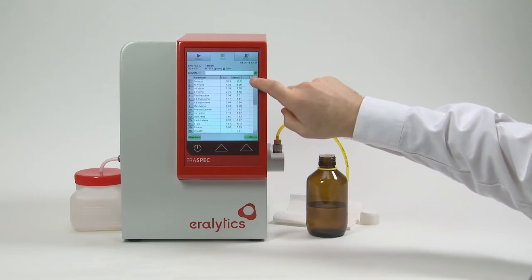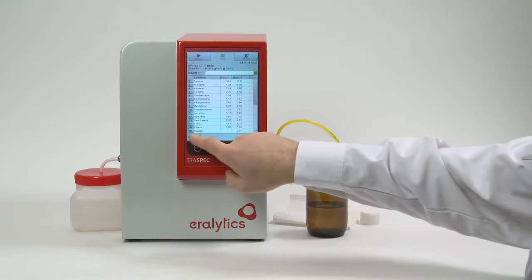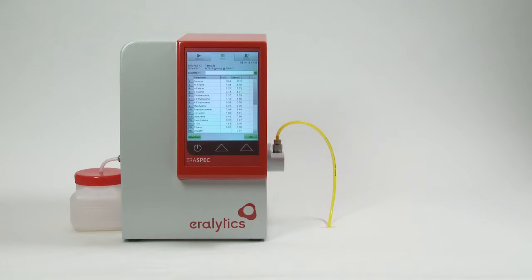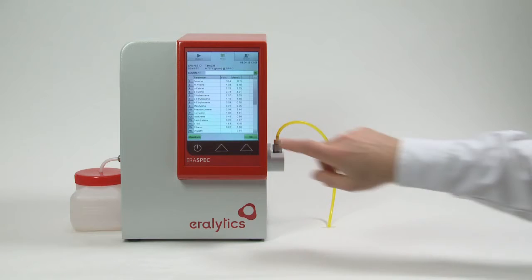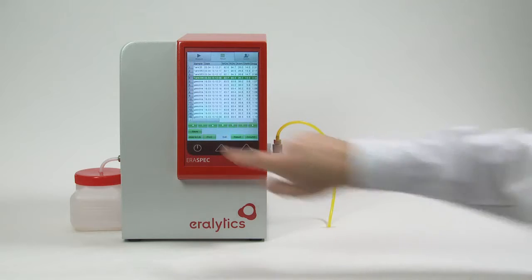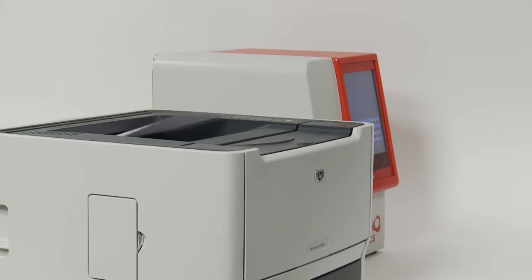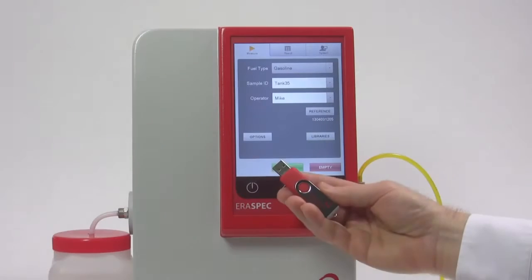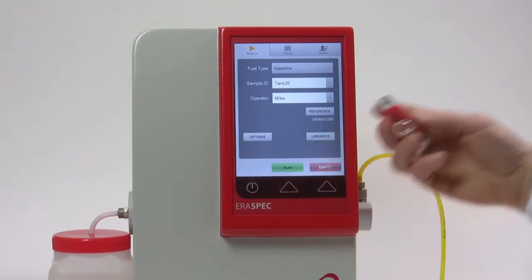To view the absorption spectrum of that sample, press Spectrum. It is also possible to load other spectra from the results for fast and easy comparison and analysis. The data can also be printed on a directly connected printer or via Ethernet connection to a LAN or network printer.